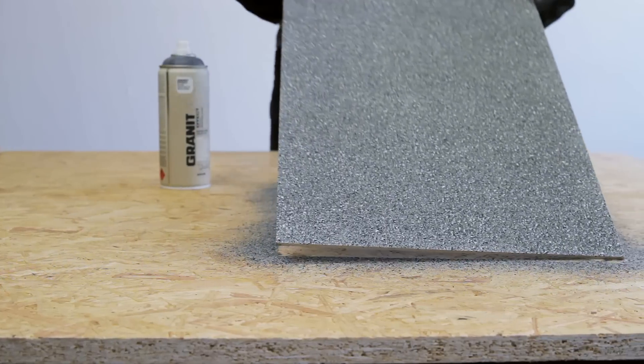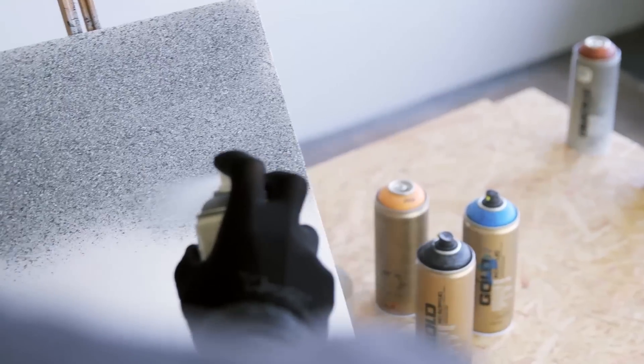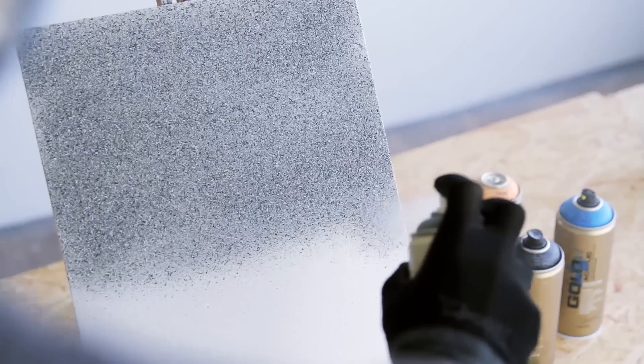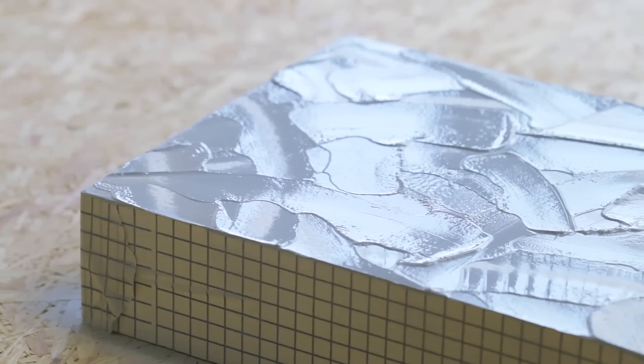The more layers, the stronger the granite effect. Apply effect at a distance of 20 to 30 centimeters from substrate. Pre-prime surfaces with Montana texture spray to achieve a more realistic stone-like effect.